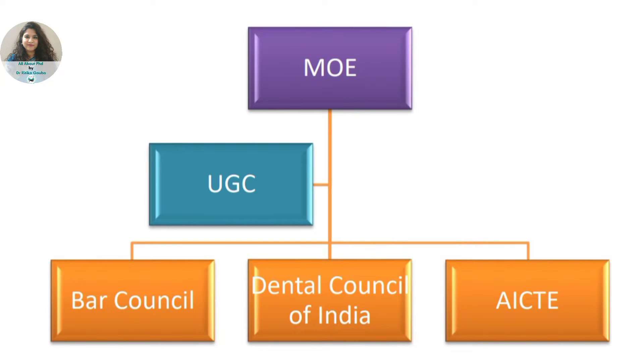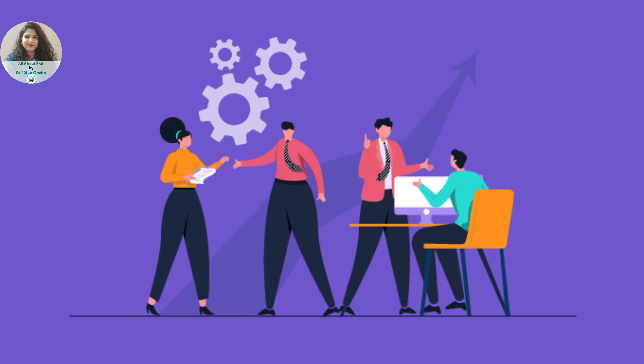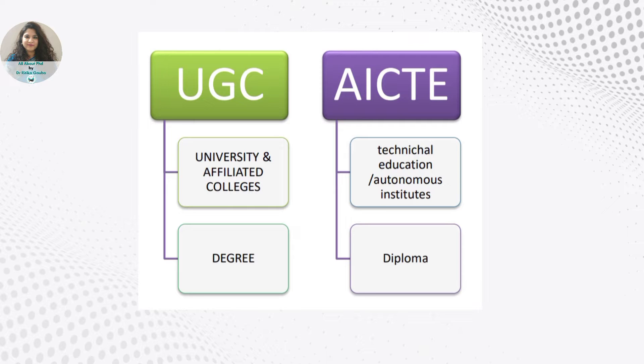One of the most prominent amongst all these councils is AICTE, All India Council of Technical Education. As the name suggests, AICTE is responsible for all technical education, which includes engineering and management. So if a university has to launch a management or an engineering program, that program needs to be recognized by UGC because it's a university, and it is not mandatory for a university to take AICTE approval — UGC approval alone is enough. However, if it is an autonomous institute providing only engineering or only a management program, then it is mandatory that they take the approval of AICTE, and they do not require UGC approval.